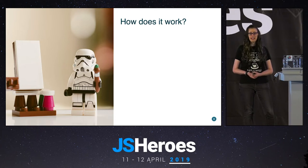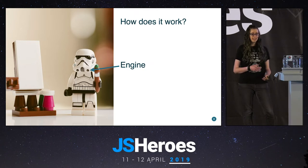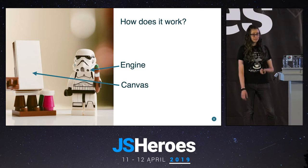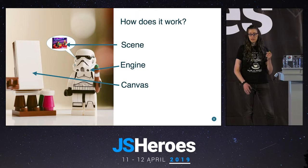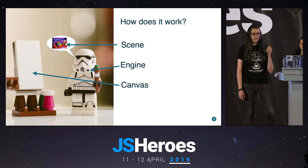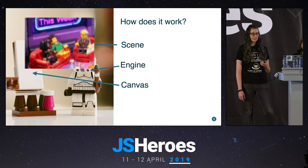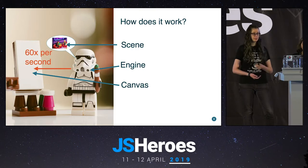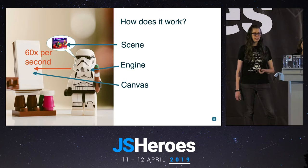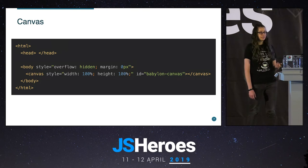How does it work? There are three basic things to think about. The first is the engine. The engine is like a happy little painter that needs a canvas, and of course it needs something to paint — in Babylon.js that's called a scene, which can be whatever you want. This happy little painter is very fast: it paints the scene 60 times every second onto the canvas. Since it's running in the browser, we need a canvas inside an HTML document, and importantly we give it an ID: 'babylon-canvas'.